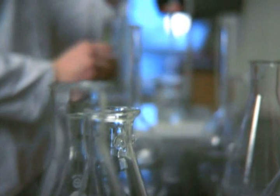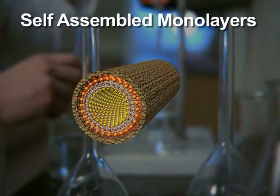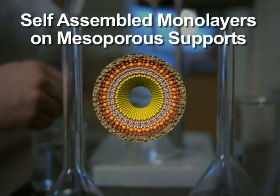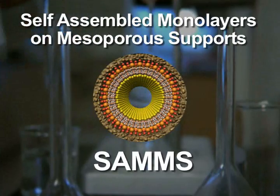One of the most effective sorbent technologies for selective removal of mercury from effluents to meet the EPA UTS is the Battelle Self-Assembled Monolayers on Mesoporous Supports, or SAMs.